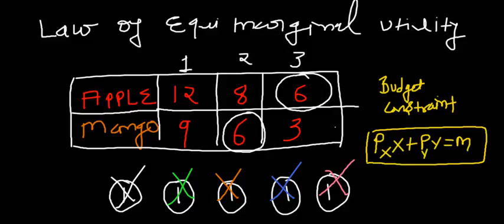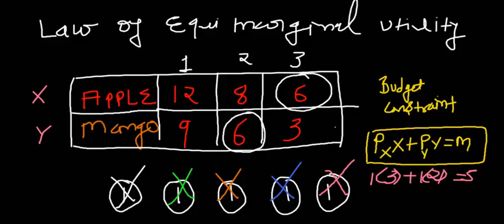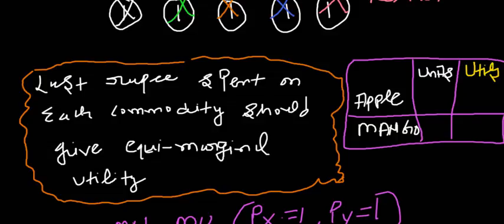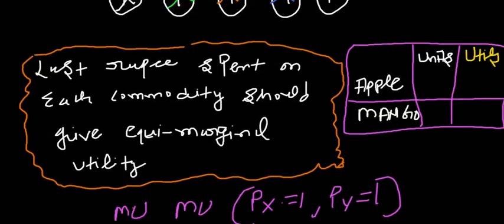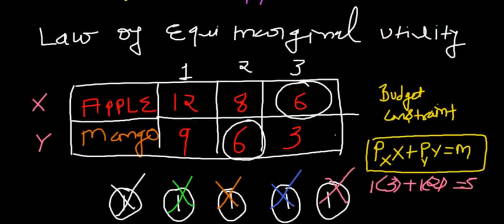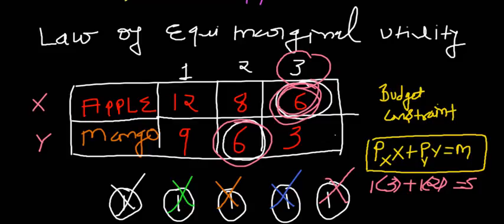This is what we know as the budget constraint — a limitation of money. With X as apple and Y as mango, we have 3 units of apple and 2 units of mango being consumed, each priced at 1 rupee, within the available budget of 5 rupees. The last rupee spent on apple was for the third unit, and the last rupee spent on mango was for the second unit — both giving equal marginal satisfaction of 6 utils.